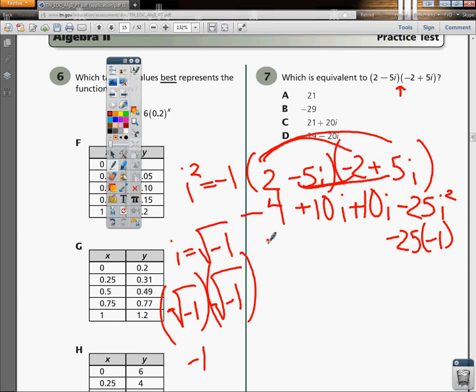So I'm going to rewrite this as negative 4. I'm going to combine my i's together here, so plus 20i. And then I've got this negative 25 times negative 1 thing, which makes it plus 25.